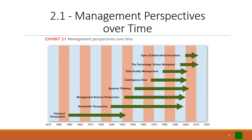Here you can see a visual representation of the evolution of management theory. In this lecture, we're going to look at the classical perspective. In the next lecture, we're going to look at the humanistic and management sciences perspectives. And then lastly, we're going to look at recent trends, which is quite a grouping going all the way from systems thinking to open collaborative innovation. The trend and pace of change has really picked up.